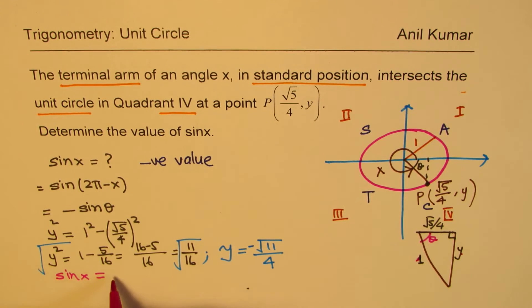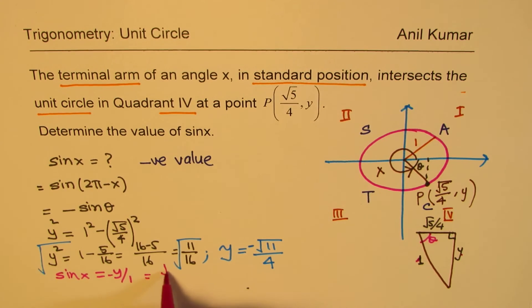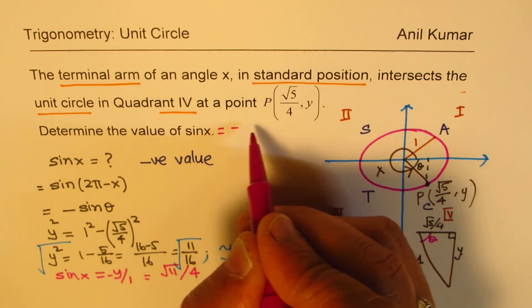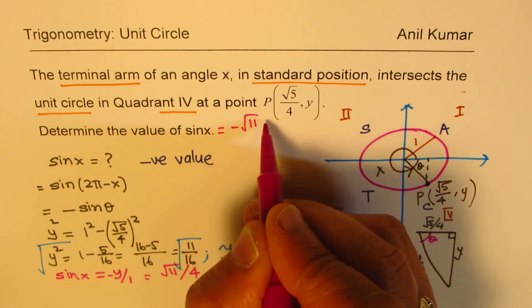We are looking from this angle θ. Y over 1, the hypotenuse. So it's basically the Y value. So it is Y over 1 with a negative sign. Of course, it is square root of 11 over 4. So we get our answer. So this is one way of getting the answer. So we get sine of X is equal to negative square root of 11 over 4.